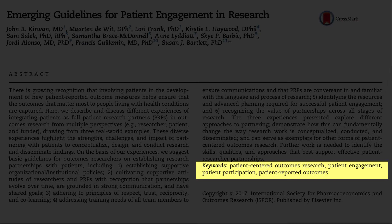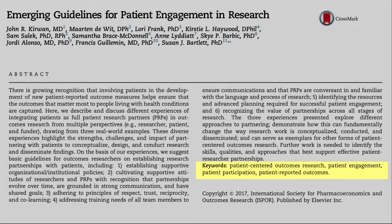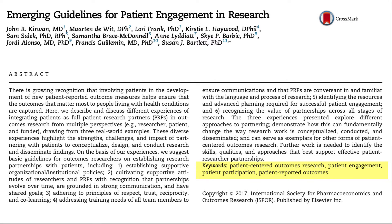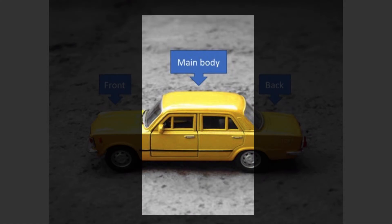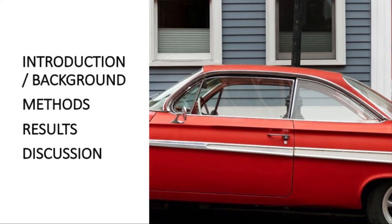Here we see an example. If you're interested in this article, by using these keywords in your search, you may find other relevant articles on your topic. Now the main body — it includes the introduction, methods, results, and discussion sections.